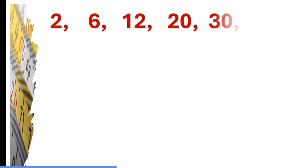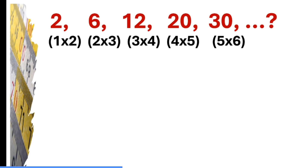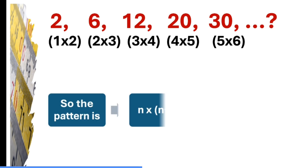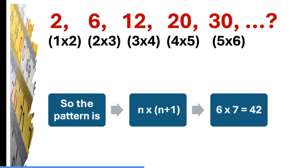Another number — think about what it should be. The first term is the product of 1 and 2, the second term is 2 multiplied by 3, the third term is 3 multiplied by 4, then 4 into 5, then 5 into 6. The pattern is n into (n+1). So the next number is the 6th term: 6 into 7 equals 42.